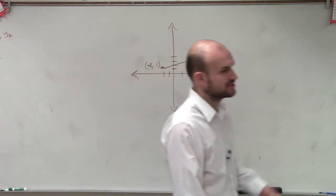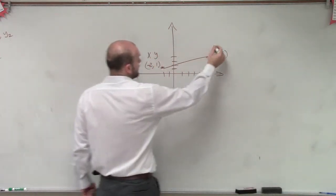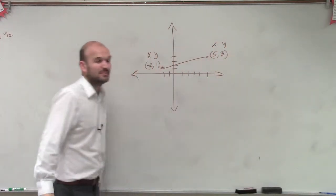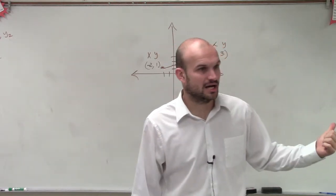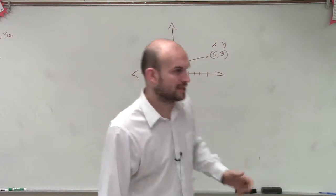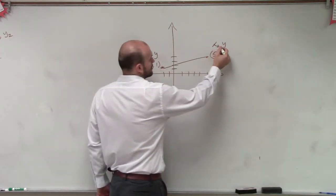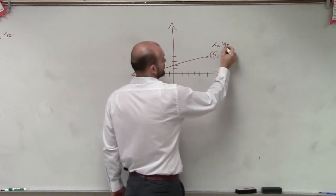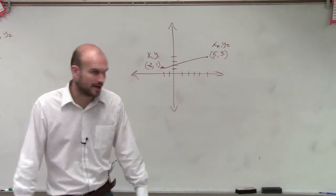So what we're going to do is, there's two different points. We could say this is x and y, and this is x and y. But sometimes it gets a little confusing, because if I say, what's x? You could say, well, there's two x's up there. So what we like to do is differentiate them and put little subscripts. It doesn't change, it's just saying, this is x1, this is x2.